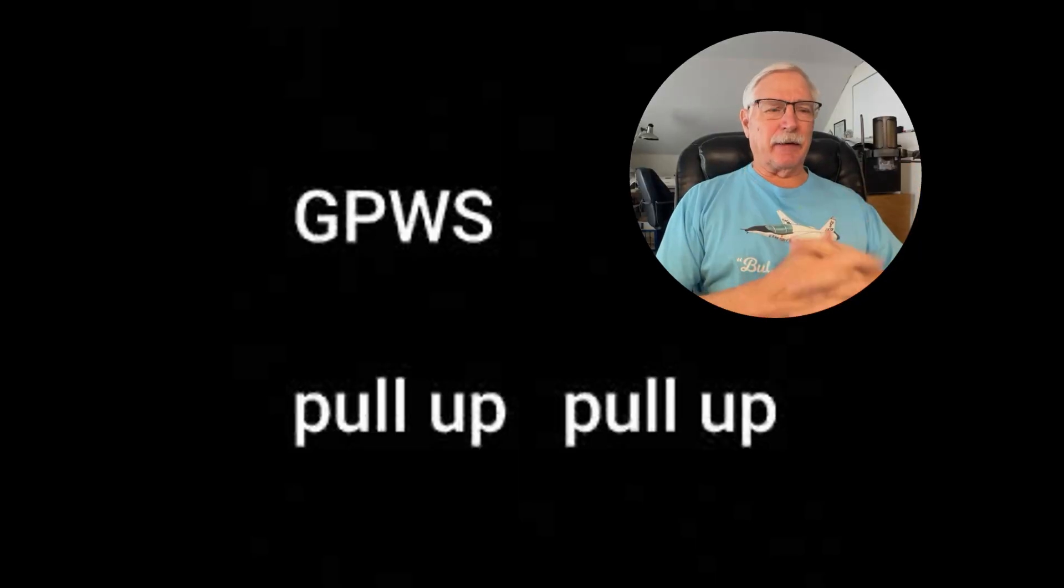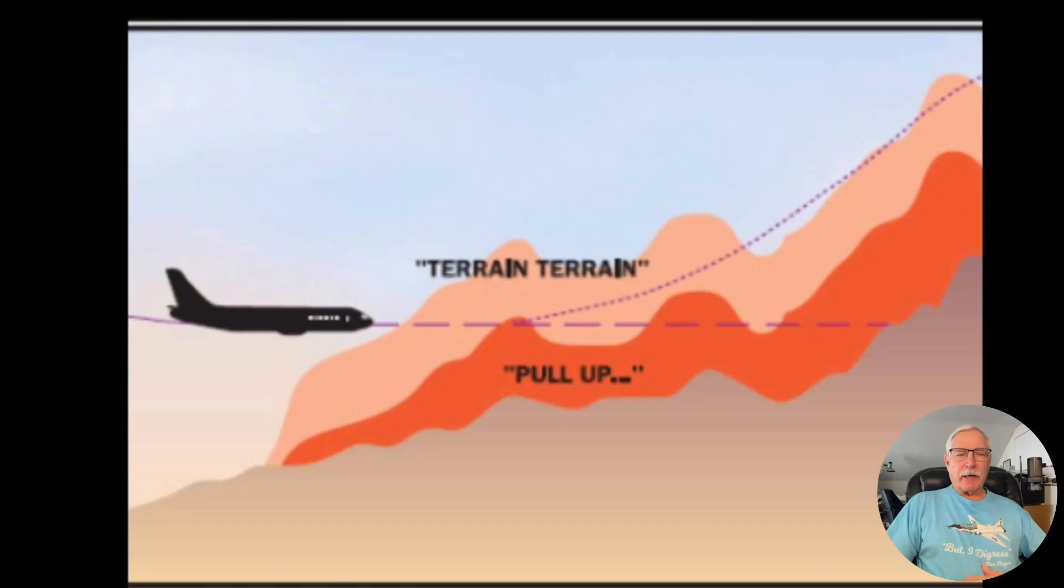Back in the day it would just give you the pull up, pull up. So basically you could be headed straight towards a mountain as long as you had plenty of terrain below you. There were a few accidents, military and civilian, where they flew into the side of a mountain because you wouldn't necessarily get a lot of warning.